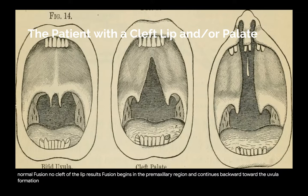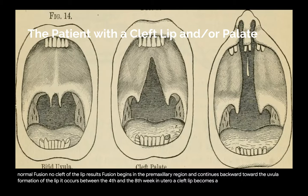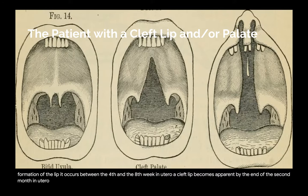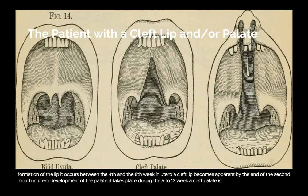Formation of the lip occurs between the fourth and the eighth week in utero. A cleft lip becomes apparent by the end of the second month in utero. Development of the palate takes place during the sixth to twelfth week. A cleft palate is evident by the end of the third month.